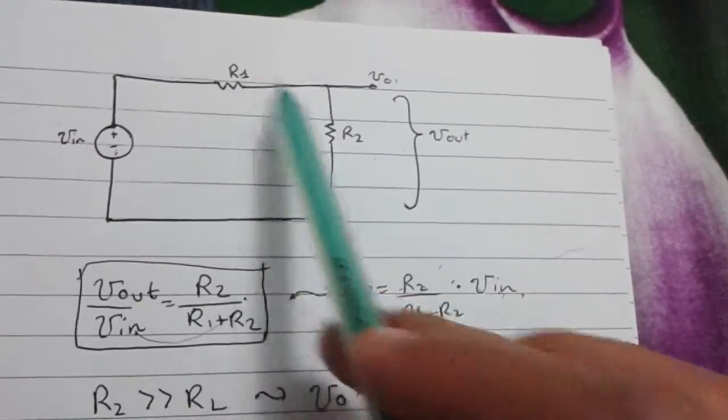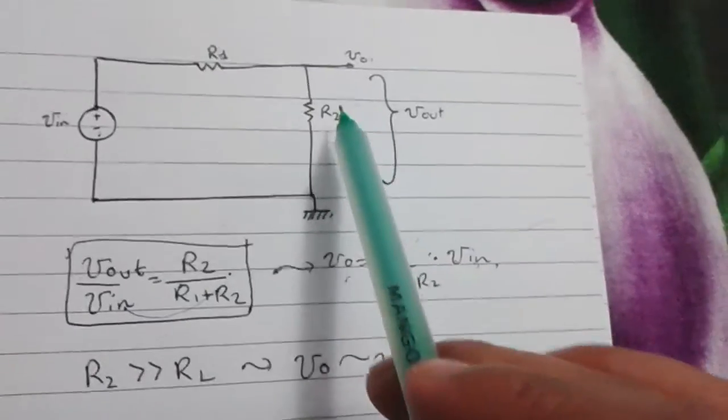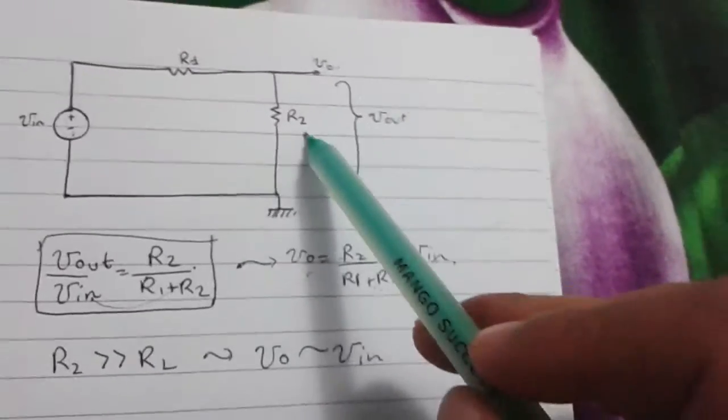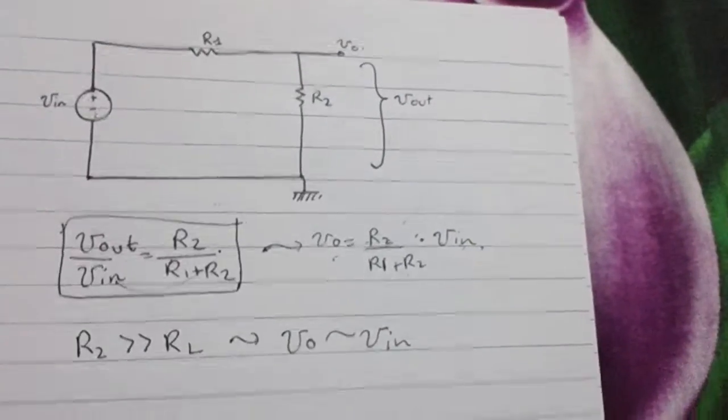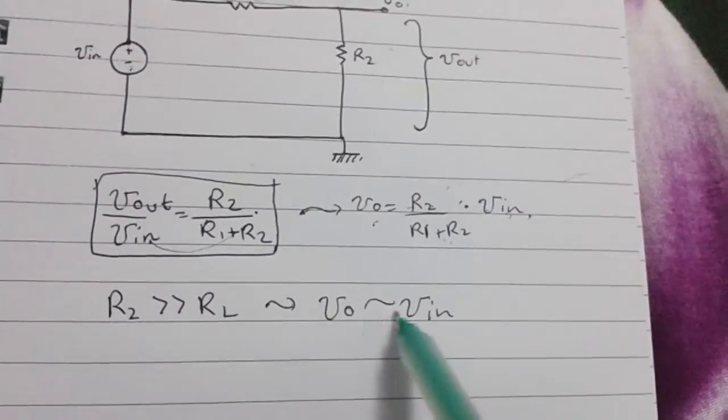So, normally we want this resistor to be very, very small and this one to be really large. But sometimes we cannot control this resistance, right? But we can control this resistance. So, you want a resistance that's very big at the output.